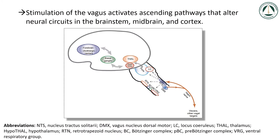There is overwhelming evidence to suggest that the vagus nerve is an important component of the immune response, and manipulating vagal tone is a way to modulate the immune system. According to Johnson and Wilson, 2018, stimulation of the vagus nerve activates ascending pathways that alter neural circuits in the brain stem, midbrain, and cortex. Regions that are impacted by vagus nerve stimulation based on past research are included in this diagram.